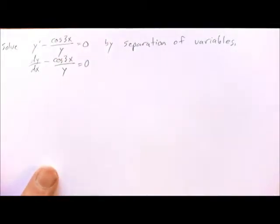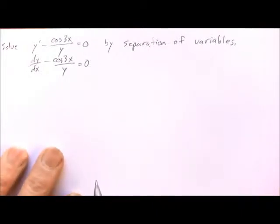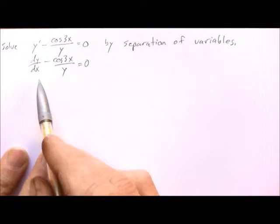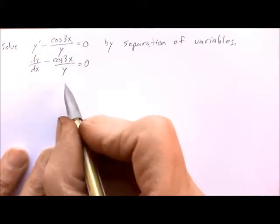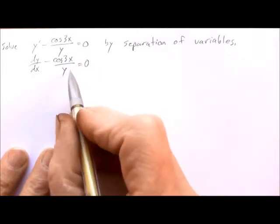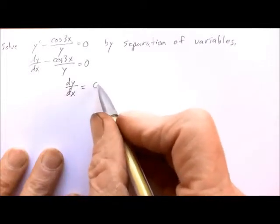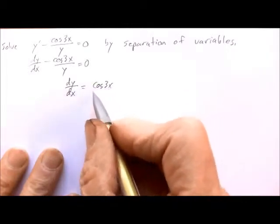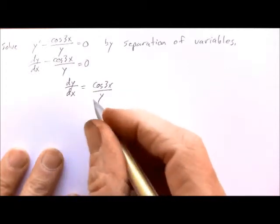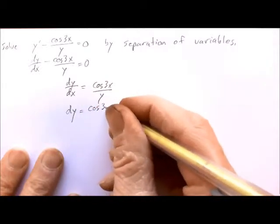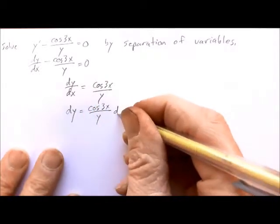Now this process is basically an algebraic process, so there's many different ways of going about doing this. Generally what we want to do is get any piece like this without a derivative over on the right hand side first, and then we'll multiply both sides by dx. So when we move this to the other side it becomes positive. We have dy/dx equals cosine 3x over y. We multiply both sides by dx and we have dy equals cosine 3x over y times dx.